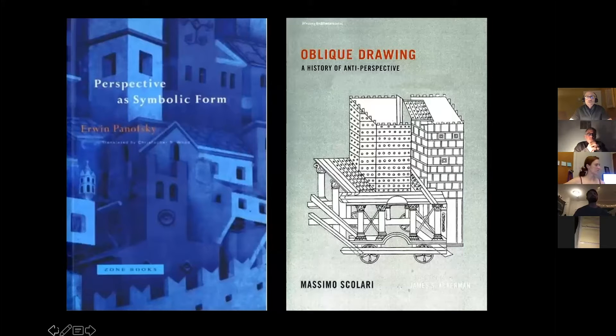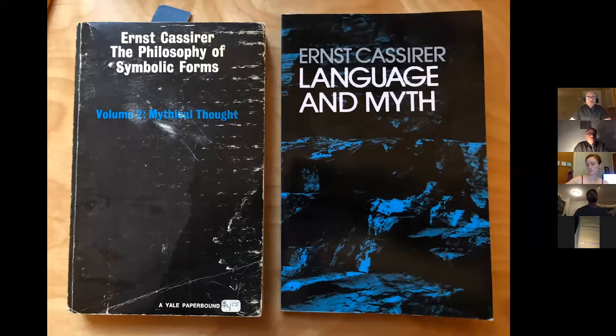These two books are really great references to the history of perspective. The one on the left is about single-point perspective; the book on the right is more about isometric and axonometric perspective. And these are a couple of other books that talk about other modes of perspective and language from anthropological studies, including non-Western systems. Cassirer is a wonderful describer of other cultures' ways of seeing the world, both through language and through visual structure.